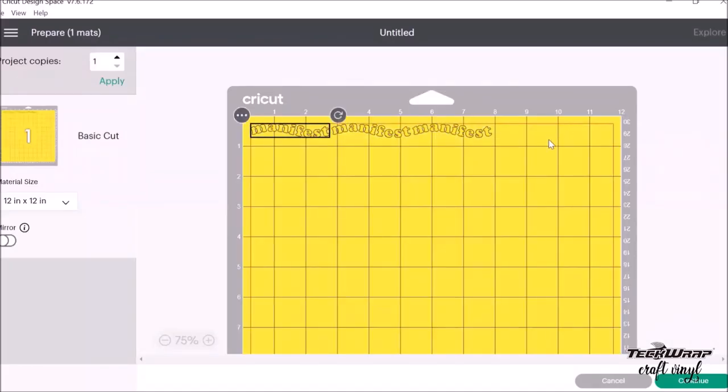Once I do that, the machine will now just cut once. A hack that I usually do is that I use the ruler to place the text on the same spot that I will be placing my vinyls on the cutting mat.